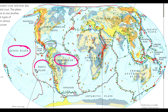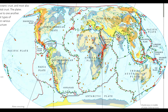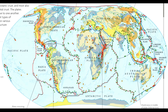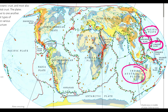The Nazca plate is between the Pacific plate and the South American plate. The Scotia plate is between the South American plate and the Antarctic plate. Between the Indo-Australian plate and the African plate is the Arabian plate. The Philippine plate is between the Eurasian plate and the Pacific plate. Then there is the Caroline plate, surrounded by the Pacific plate, Philippine plate, and Indo-Australian plate.